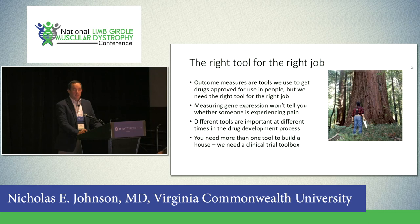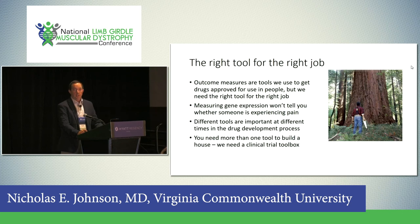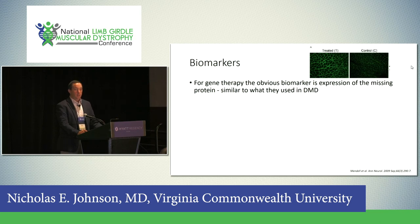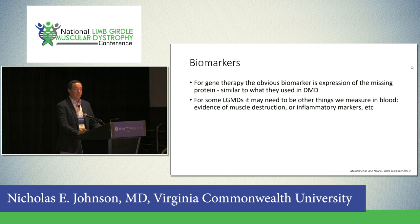You need the right tool for the right job — measuring gene expression won't tell you whether someone's experiencing pain. Different tools are important at different times in drug development, and we need more than one tool in the toolbox. For gene therapies, the obvious biomarker is measuring expression of the missing protein, similar to what's done in DMD. For some limb girdles, it may be blood markers — evidence of muscle destruction or inflammatory markers. MRI is also useful — measuring whether fat content or fibrosis of a muscle changes over time.